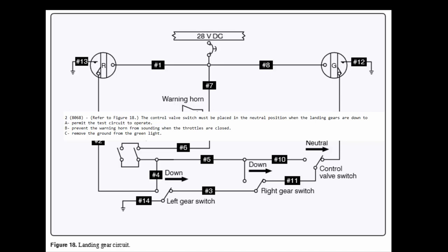The answers are: permit test circuit to operate, B is to prevent warning horn from sounding when throttles are closed, or C to remove the ground from the green light.